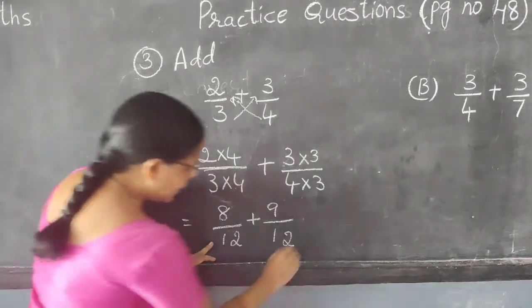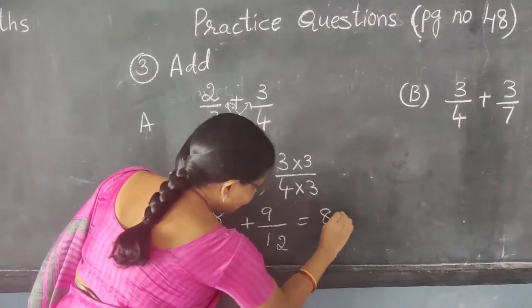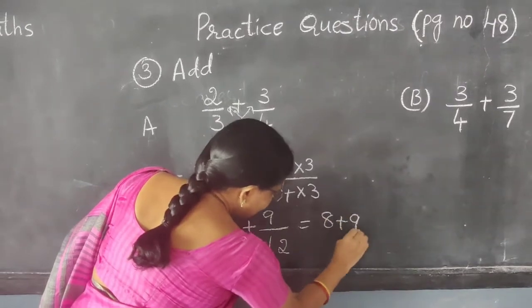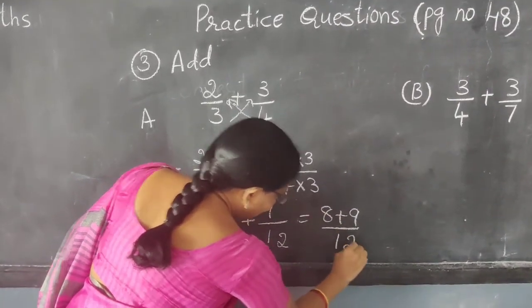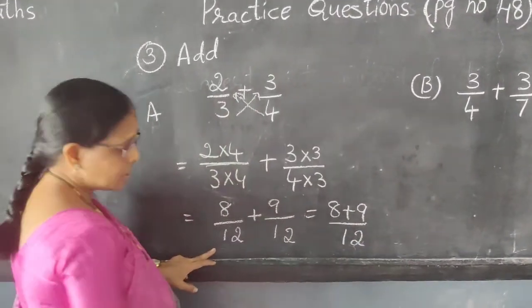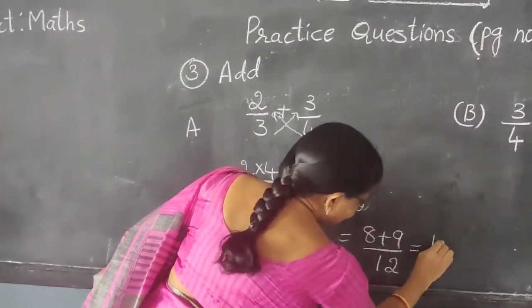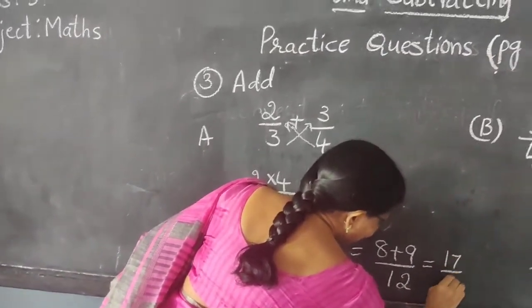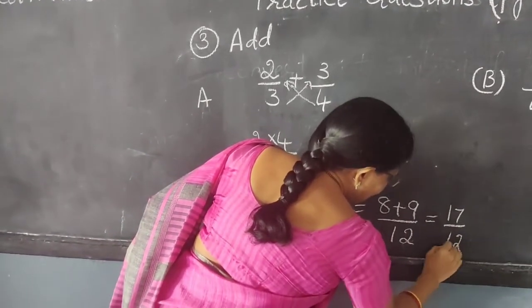Now it is a like fraction, so we can add. 8 plus 9 over 12. So 8 plus 9 is 17, giving 17 by 12 as the answer.